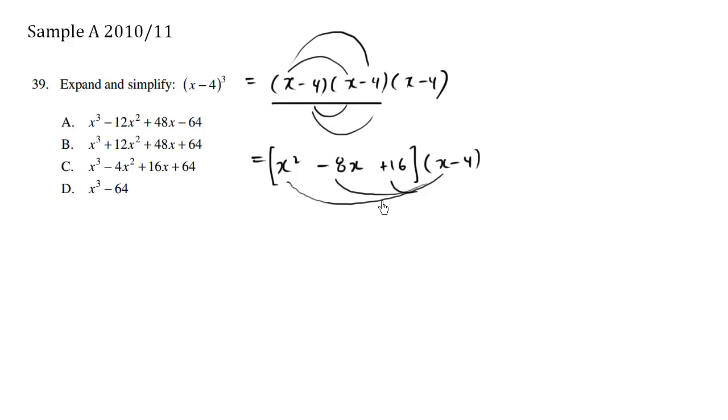So let's focus on this x first. So this equals x times x squared is x cubed. x times negative 8x is negative 8x squared. x times 16 is positive 16x.